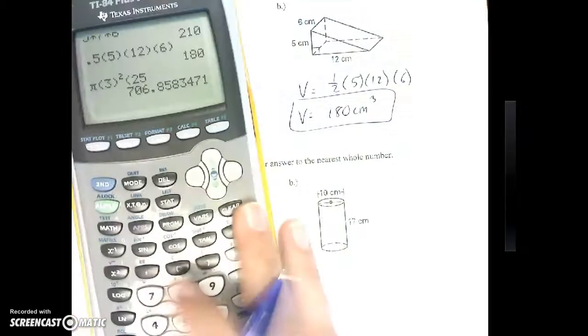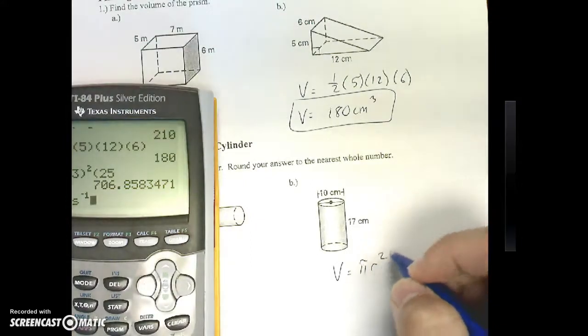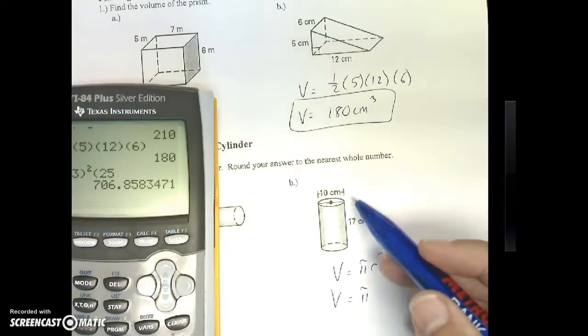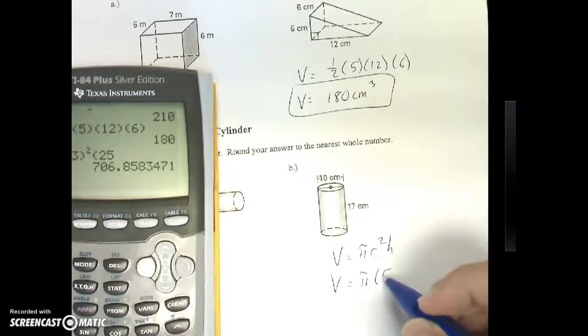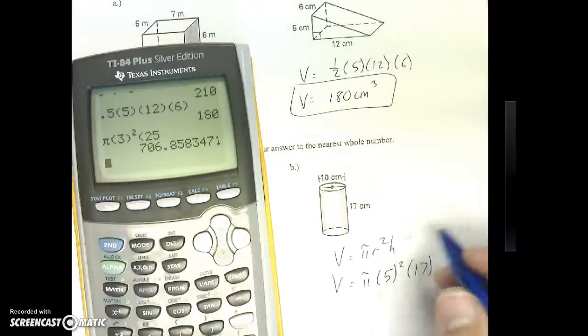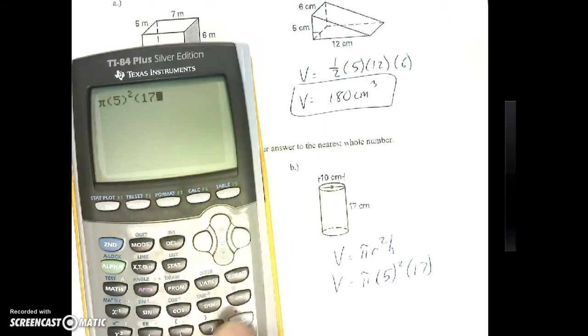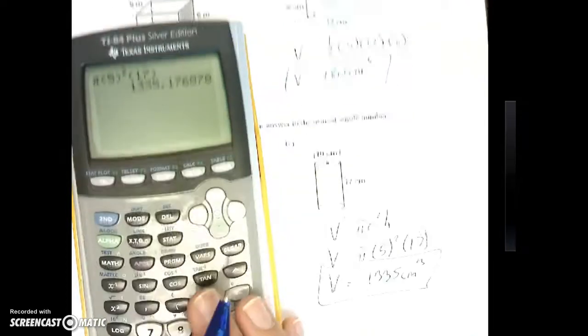Now, here's the only curveball I can throw at you with these problems. My volume is pi r squared h. So volume equals pi. Do I want to use 10? Hopefully not. I'm not saying yes to that because my radius is 5. And then my height is 17. So back to my trusty calculator, pi 5 squared times 17. My volume is equal to 1335 centimeters cubed. All right, on to the back.